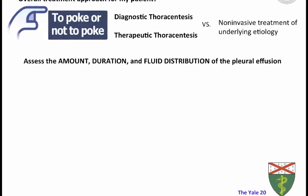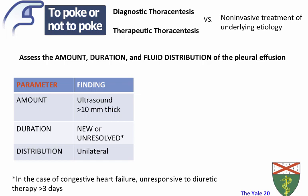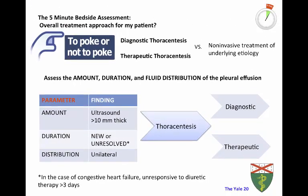The decision also comes down to the amount, duration, and fluid distribution of the pleural effusion. If there's a large amount of fluid, a new effusion, unilateral distribution, or other concerning features, you'll likely need to do a procedure. The question then becomes: do I do the lower-risk diagnostic procedure, or the higher-risk but more effective therapeutic procedure?